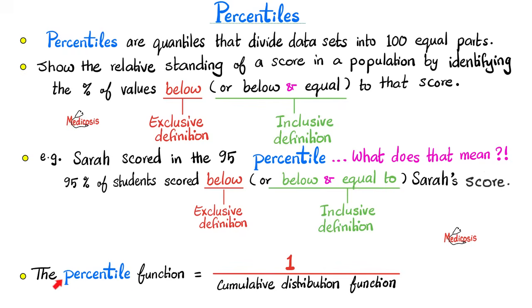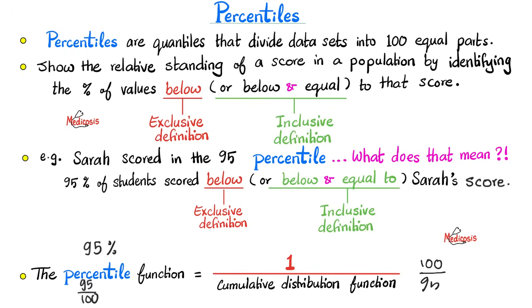For the math buffs out there, the percentile function is the inverse of the cumulative distribution function. So if we say the 95th percentile, it means 95 over 100. Therefore, the cumulative distribution function is the opposite, meaning it's 100 over 95.